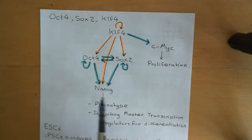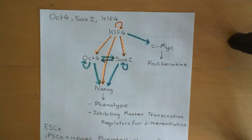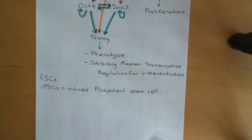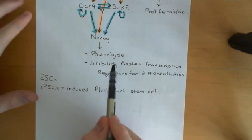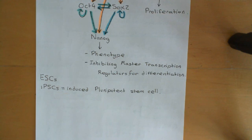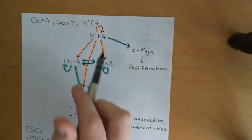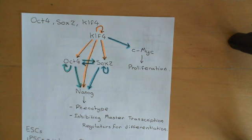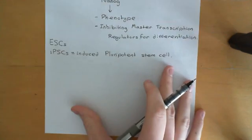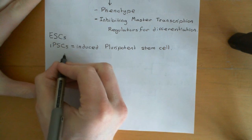Because look at the downstream regulator NANOG: NANOG would repress the expression of all the other master transcription regulators involved in giving the cell its differentiated state. It would also increase the expression of genes which give the cell a phenotype similar to embryonic stem cells. In addition, KLF4 induces the downstream transcription regulator CMYC, which gives the cells the proliferation property.